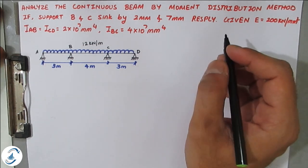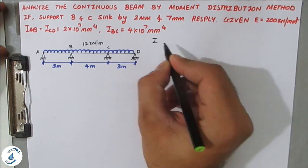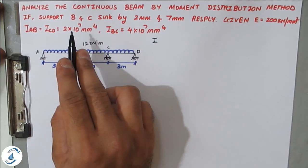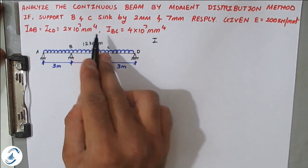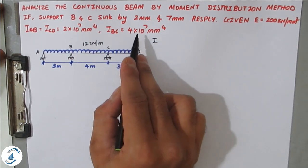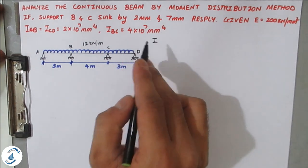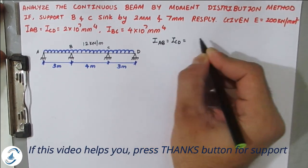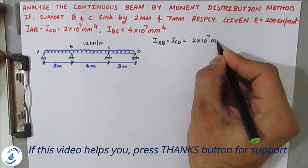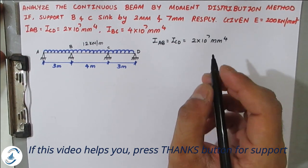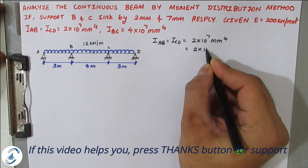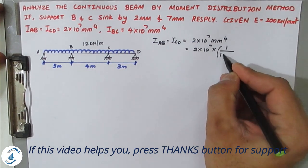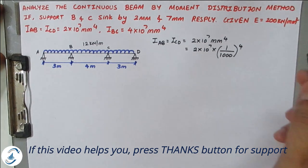First we will convert the I values. There are two separate I values given: I_AB and I_CD have one value of 2×10⁷ mm⁴, whereas span BC has a different I value of 4×10⁷ mm⁴. For I_AB and I_CD, we write 2×10⁷ and divide by 1000 raised to the power 4 to convert to meters.